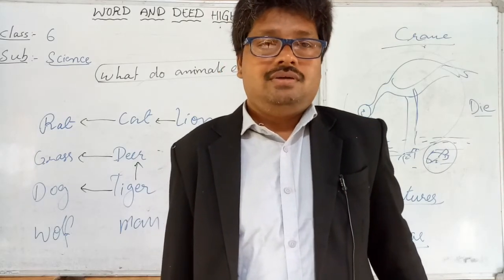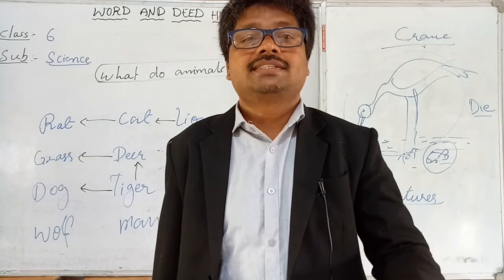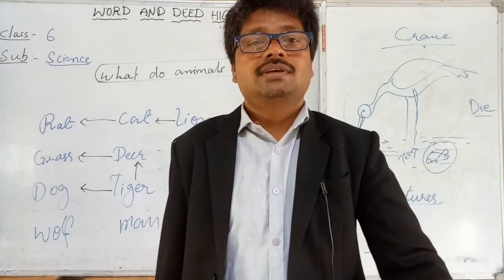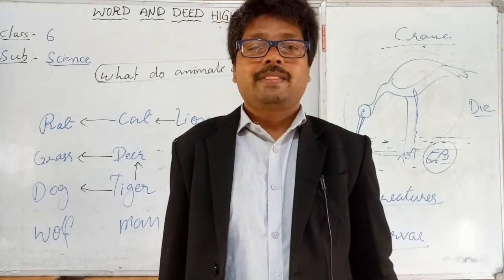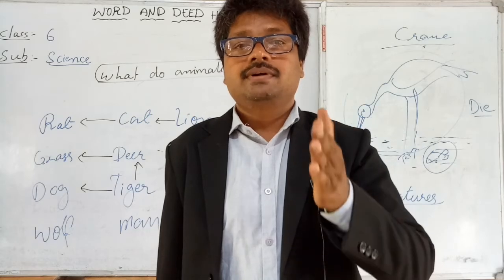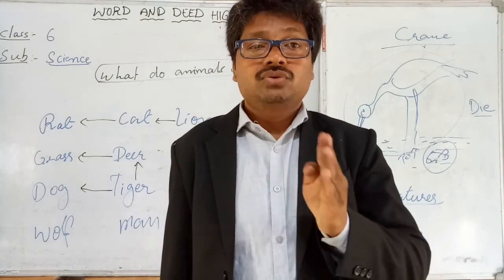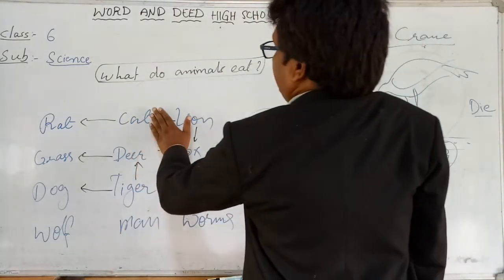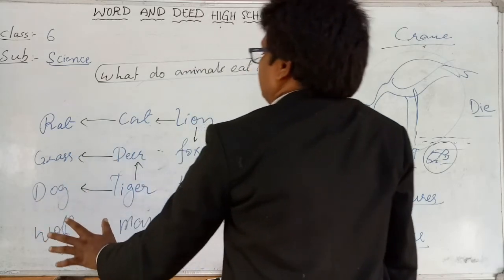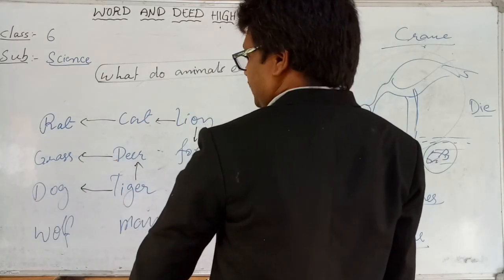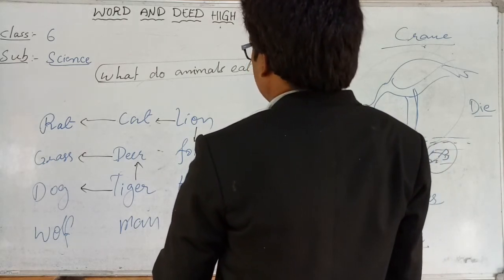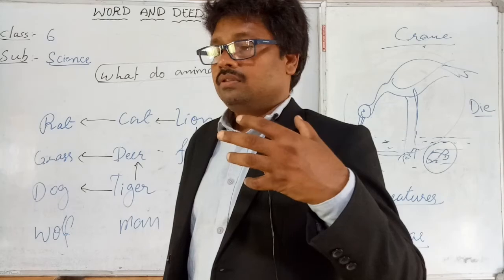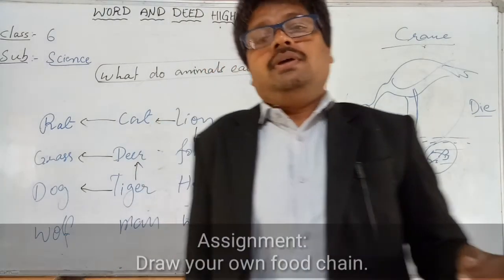We kill insects using insecticides and pests using pesticides. If frogs eat the dead insects or pests treated with these chemicals, the frogs will also die. Like this, the web is disturbed. If there are no cats, if there is no grass — the balance breaks. We should not use pesticides and insecticides to kill worms; instead, we should use natural manures to grow our plants.